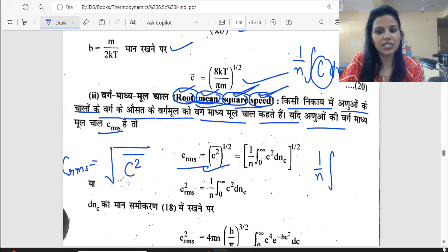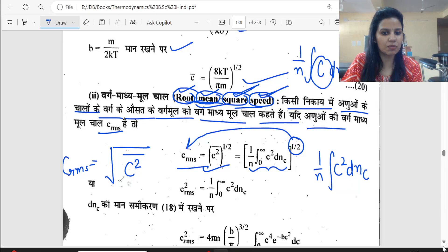C squared rms is simply the average of C square, which is 1 upon N integral C square dNC. This is the average of C square and the under root of it. We have to take the under root of both sides.